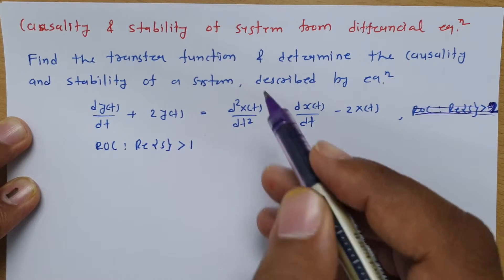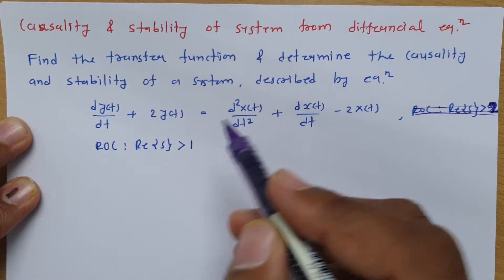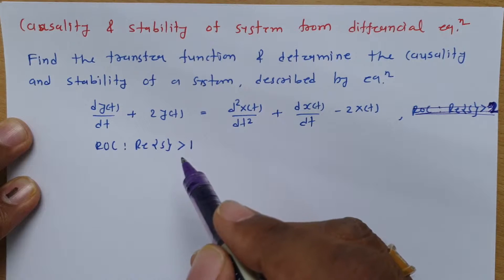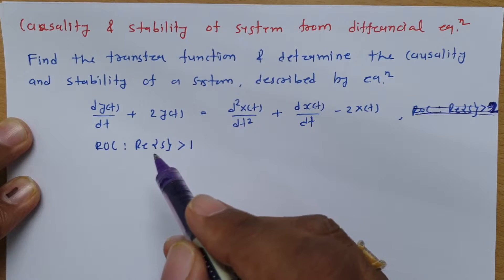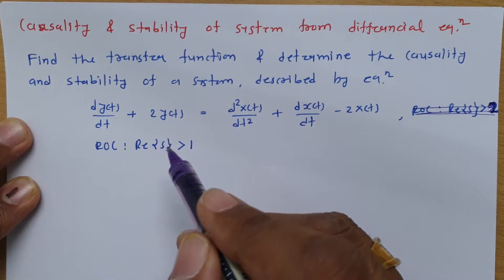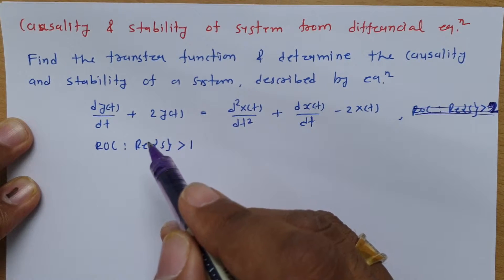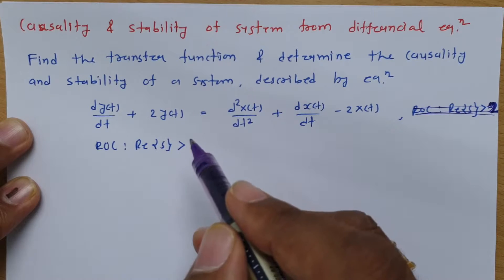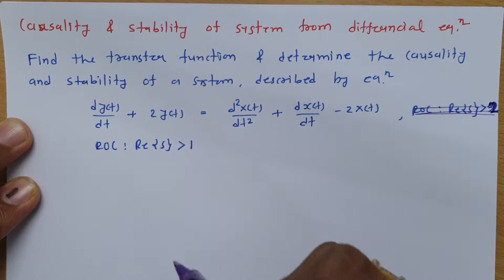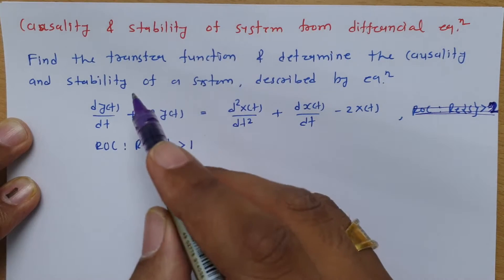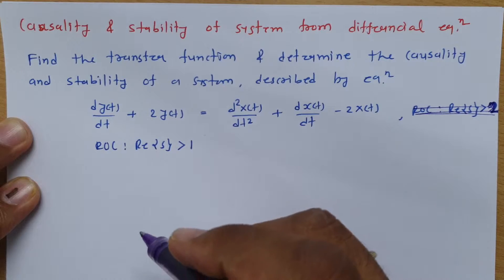To identify stability and causality, the ROC of this problem is given. The ROC is: real part of s is greater than 1. So ROC is given here, and we are required to identify causality and stability.